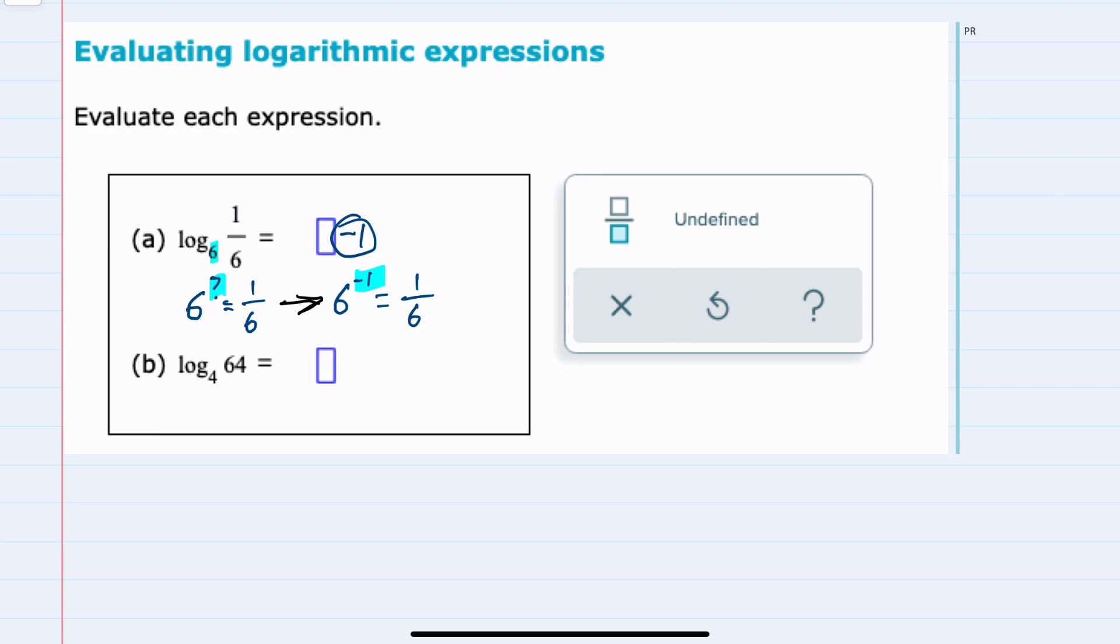Using the same approach for part b, log base 4 of 64 is asking: what power do I need to raise 4 to, since 4 is the base, to get what I am taking the log of, which is 64?